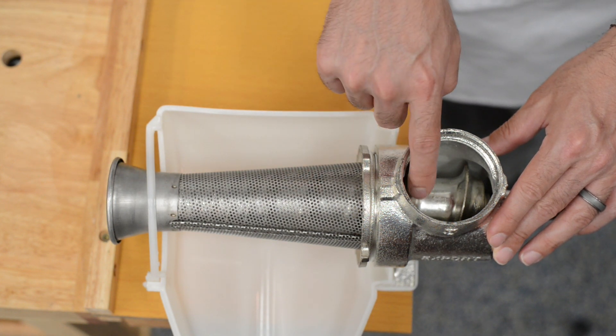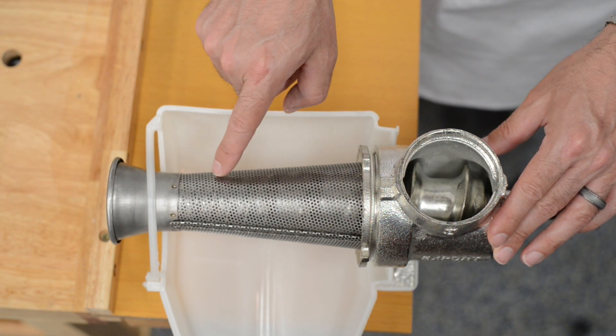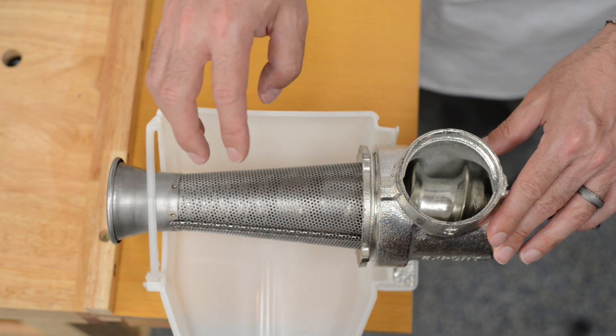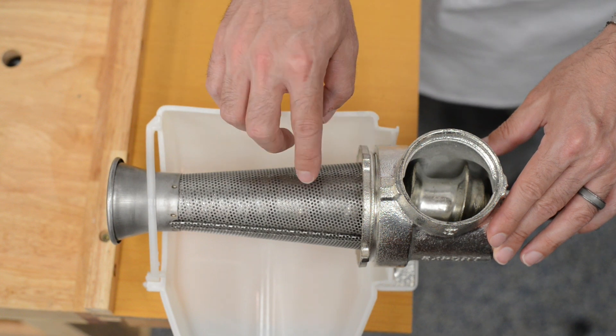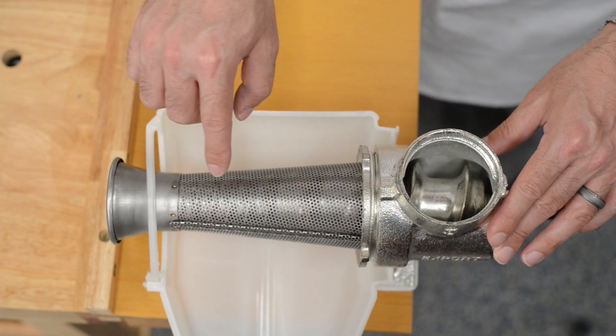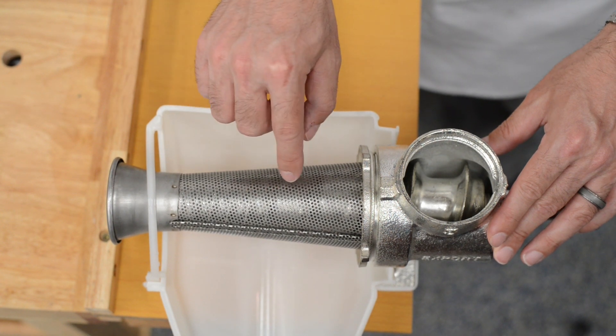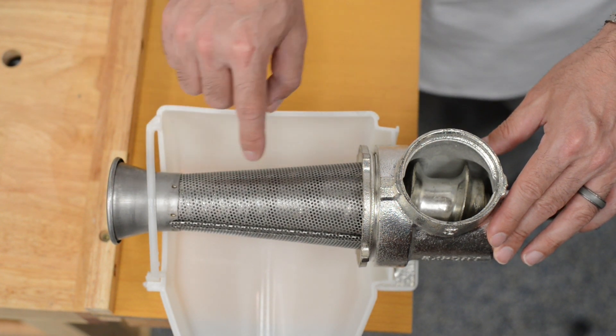When you turn the cast iron spiral, it will conform itself to the screen and you may get some metal shavings. This is okay and normal. It's in order to form a tight squeeze between the spiral and the screen itself. It's designed to have metal on metal contact and trap the tomatoes in each rung of the spiral.